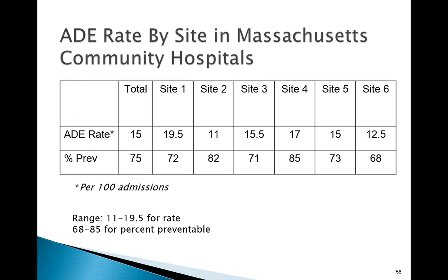Data from a study at six community hospitals in Massachusetts, using a modified trigger tool focused on adverse drug events, found that every single hospital had a substantial adverse drug event rate — 11 to 19.5 adverse drug events per 100 admissions — and notably 68 to 85% of them were preventable. Prior work in academic hospitals found rates around 7%, with only about a third preventable. The biggest finding was that an even higher percentage of ADEs were preventable, and every single hospital had a substantial adverse drug event rate.